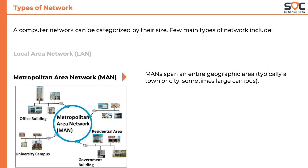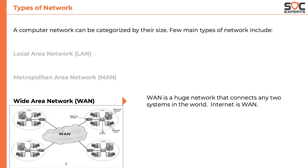The next type of network is Wide Area Network, or WAN. WAN is a huge network that connects any two systems in the world. The Internet is a WAN.